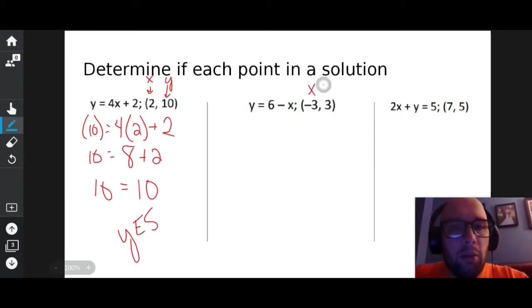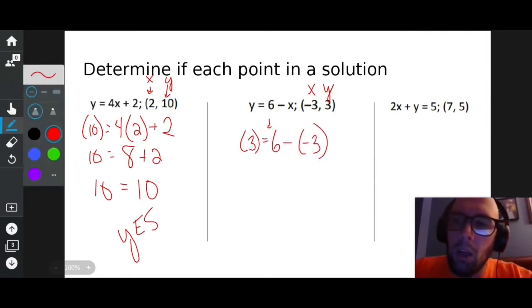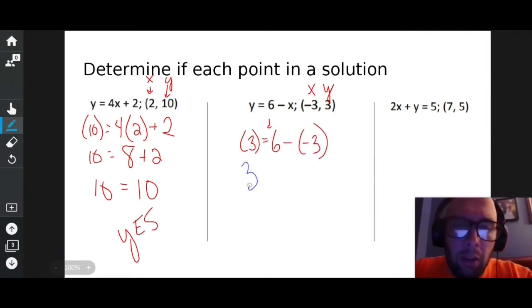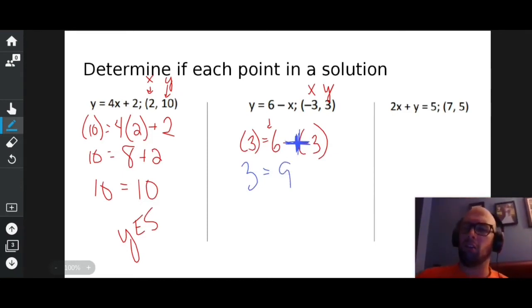You're an X, you're a Y. I'm going to rewrite this, but instead of Y, I'm going to put out three. Six minus, and instead of X, I'm going to put negative three. Well, three is three on the left. Double negatives become positives. Six plus three is nine. Three equals nine. That's not true. That's not true at all. No.